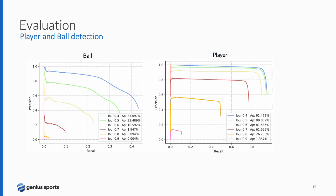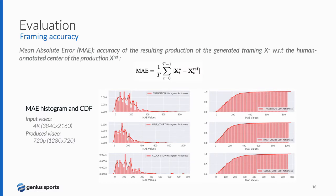We first evaluate our player and ball detectors. Our player detector achieves 90% average precision using an intersection over union of 0.5. The ball detector only achieves 23% for the same IoU. Nevertheless, the lack of accuracy in ball detection does not prevent the system from delivering good quality auto-production and can be improved using tracking. To measure framing accuracy, we use the mean absolute error of the resulting production with respect to human-annotated centers. Using a 4K input video and a 720p produced video, the mean error is about 10% of the produced video width, ensuring the main action is always contained inside the framing.